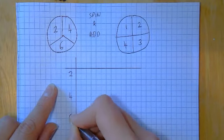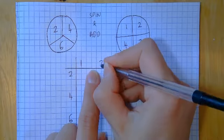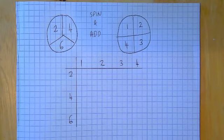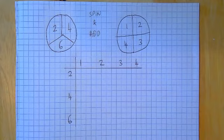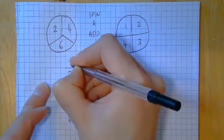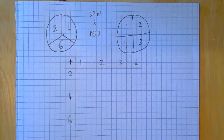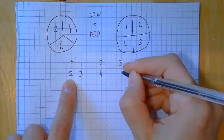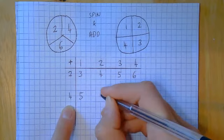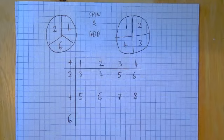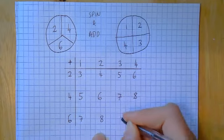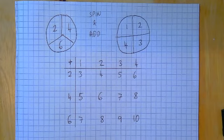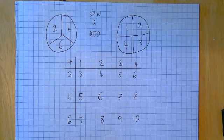I'm going to have one spinner on one side and one across the top. Now I fill in by adding the entries: two plus one is three, two plus two is four, and so on across all rows. For six and one through to six and four, I'm just adding each time. That's my sample space diagram for those two spinners given that the rule is to add.